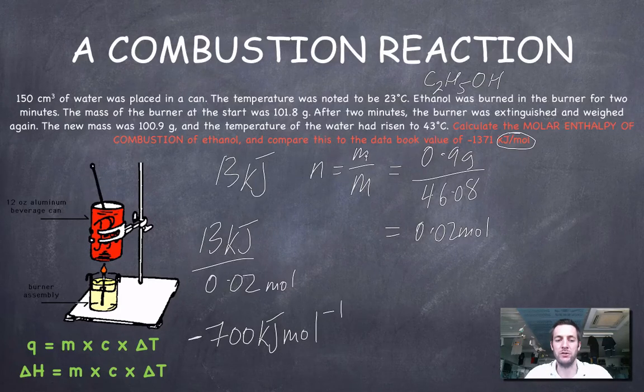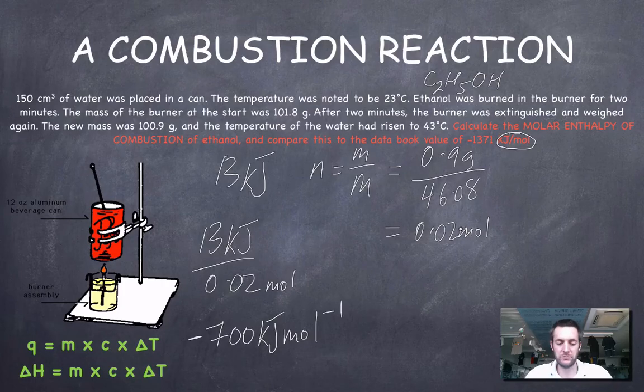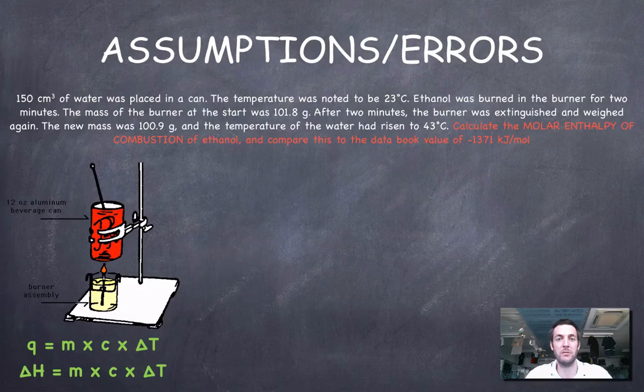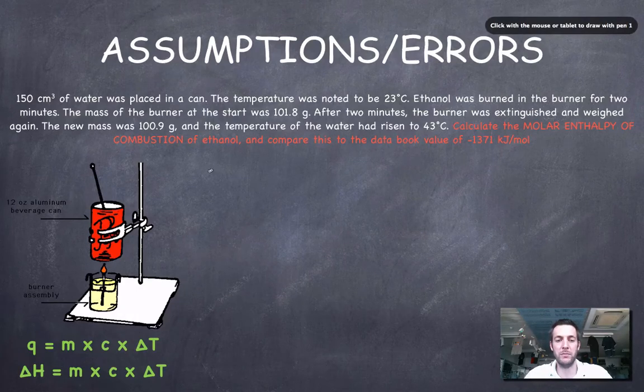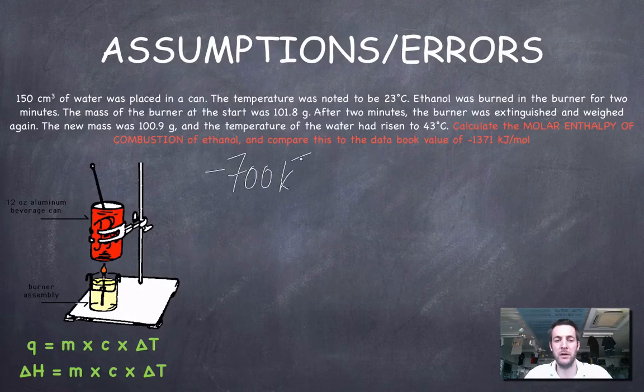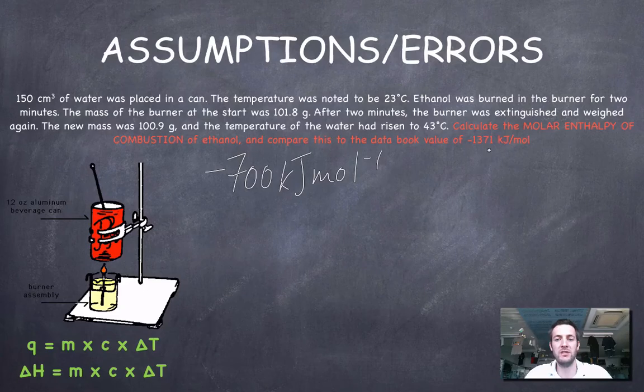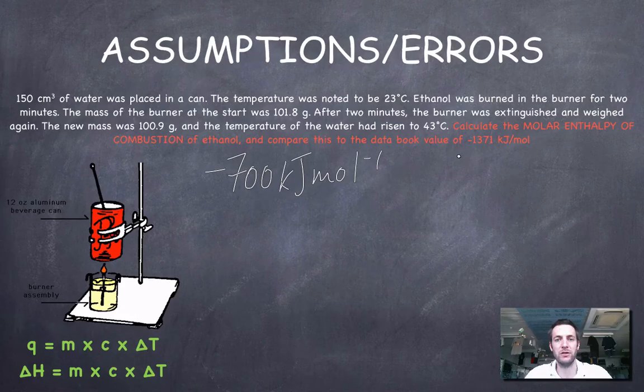And the final thing we've got to do is talk about any assumptions or errors that might have taken place. We've just found a value of minus 700 kilojoules per mole. We're being told that the data book value, the one we believe to be correct, is minus 1,371 kilojoules per mole. There's a massive difference between those two.